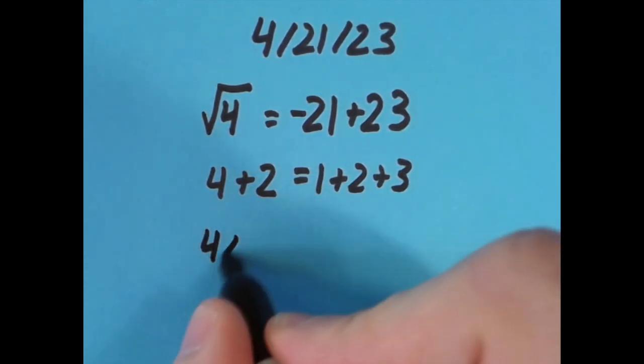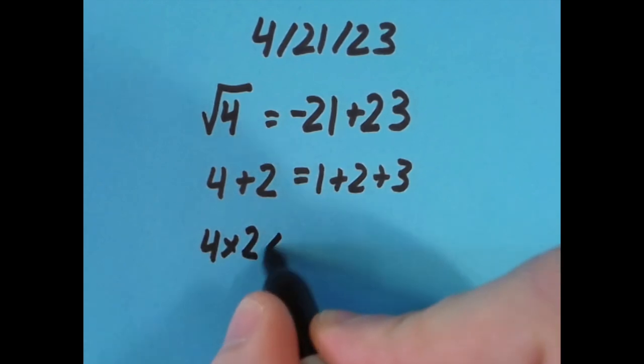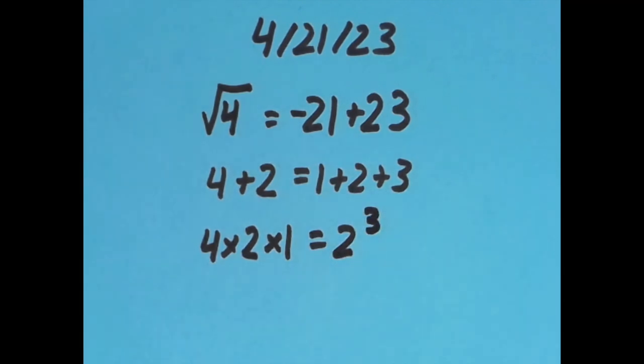With the equal sign over a spot to the right more, I could do 4 times 2 times 1 to get 8. And that's going to be the same thing as 2 to the third power, which is also 8.